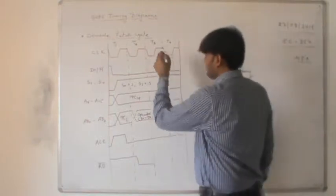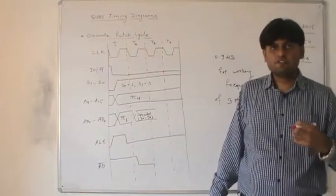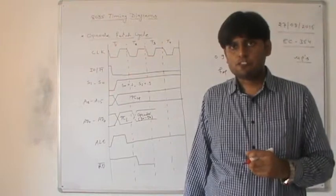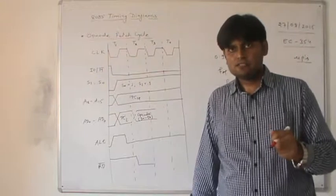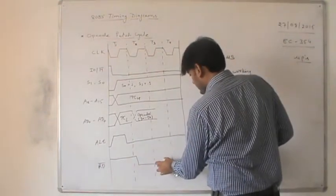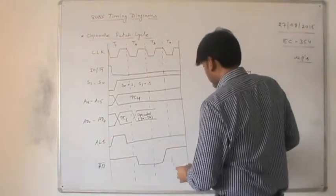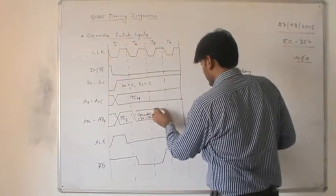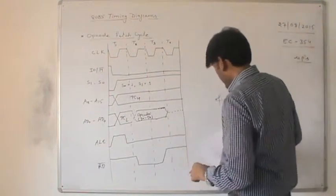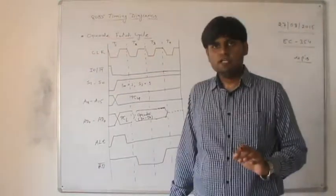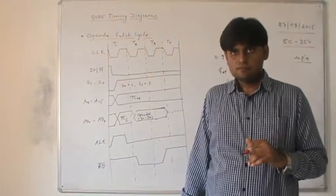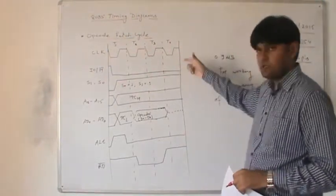T3 is the wait state — the microprocessor waits for the fetched data. There is a fraction of time required by the microprocessor to fetch the data from memory. T3 provides that timing. The read signal is held active until T3 so the microprocessor can recognize the opcode. The opcode remains available till T3. In T4, it is decoded and executed.